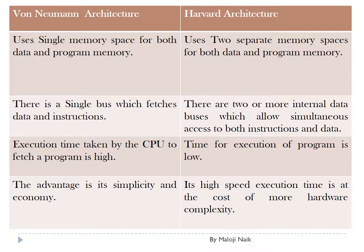The differences and disadvantages of Von Neumann architecture and Harvard architecture are shown in this table. In Von Neumann architecture, it uses a single memory space for both data and program memory. There is a single bus which fetches data and instructions. Execution time taken by the CPU to fetch a program is very high. The advantage is its simplicity and economy.